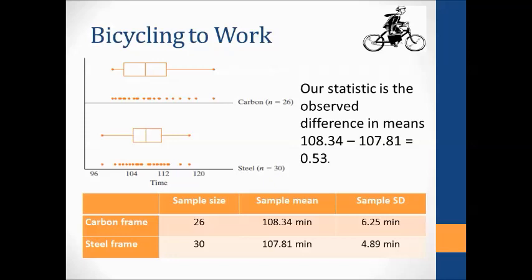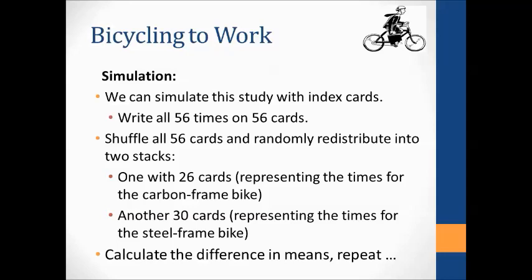Here are the results. Looking at the dot plots or box plots, the medians are about the same place. The means in the table — 108.34 and 107.81 — are very similar. Our statistic is the difference in those two means. Just like with comparing two proportions, we ask: what's the likelihood we get something as extreme as 0.53 just by chance? To develop a null distribution, instead of putting the response as a word on cards, we put numbers because it's a quantitative response. We shuffle them and calculate the two means in a similar way.